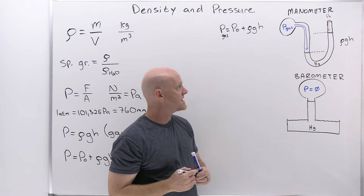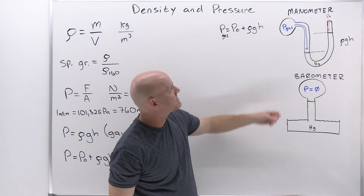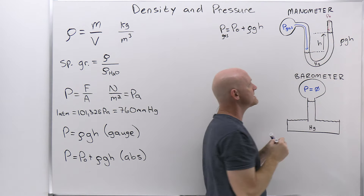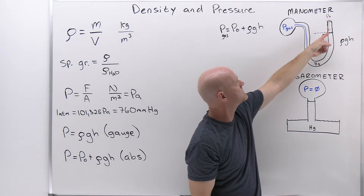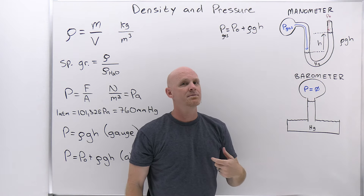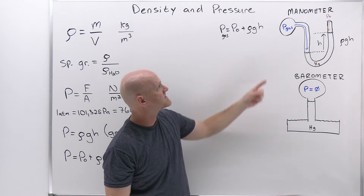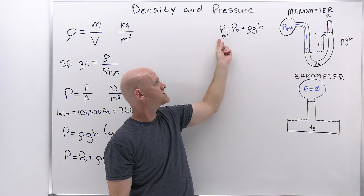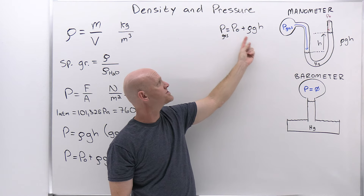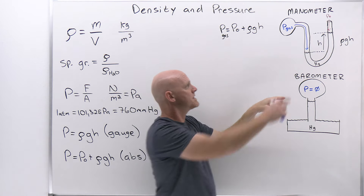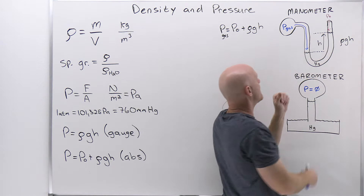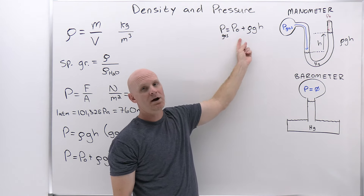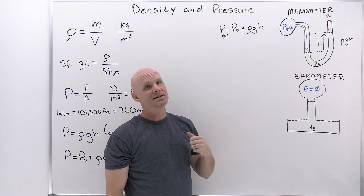The h here is the difference in levels of fluid on the two sides of the manometer. If the side where the gas is sits lower, then the gas pressure is higher than atmospheric by ρgh. If it were reversed, the gas pressure would be lower than atmospheric by ρgh and you would subtract instead.